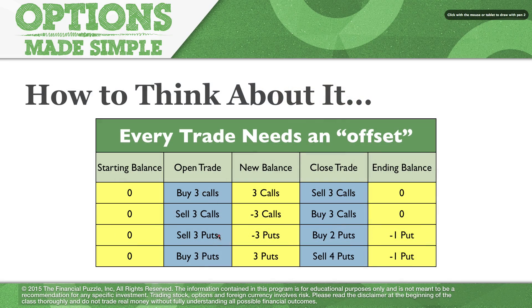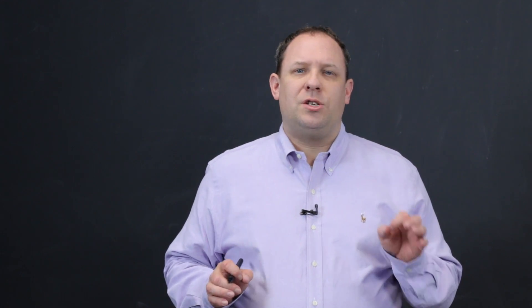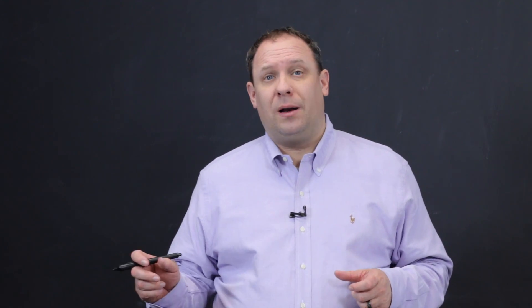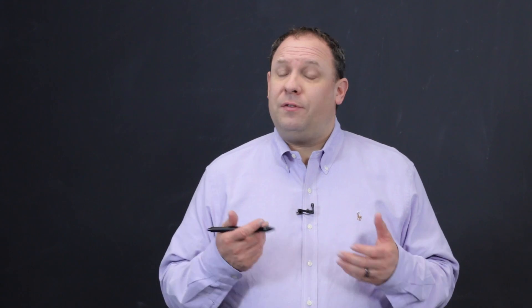Let's do one more example. Say we start by buying three put options, so our new balance is three puts. But what if we came behind it to close and sold four puts? Three of them close out the initial three that we had, and the new one gives us a net deficit — so we're minus one put. The principle here is just do the opposite of what you did to get into the trade. If you buy one to open, sell one. If you sell one to open, buy one. If you sell an odd number from what you purchased, the remainder shows up in your account as part of the balance.